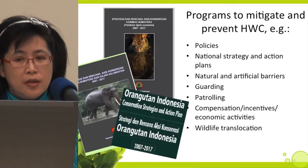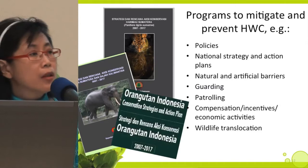There have been a lot of programs to mitigate and prevent human-wildlife conflict — for example, national policies, national strategy and action plans, natural and artificial barriers, guarding and patrolling, compensation or incentives, economic activities, and wildlife translocation. But human-wildlife conflict keeps increasing, protected species populations and their habitat keep declining, and all the good things stop when the project ends.